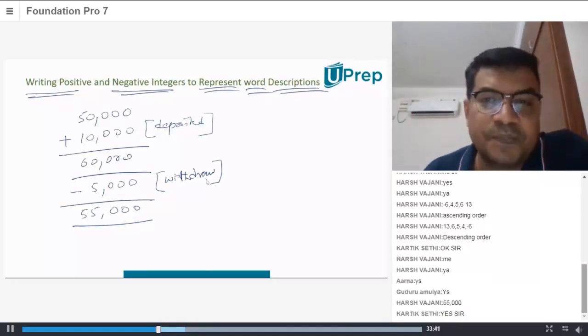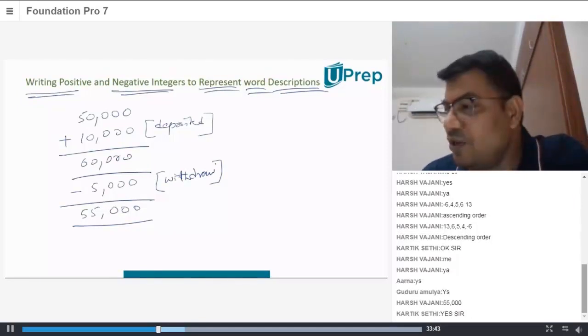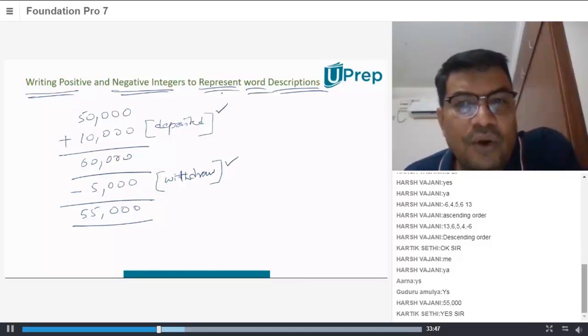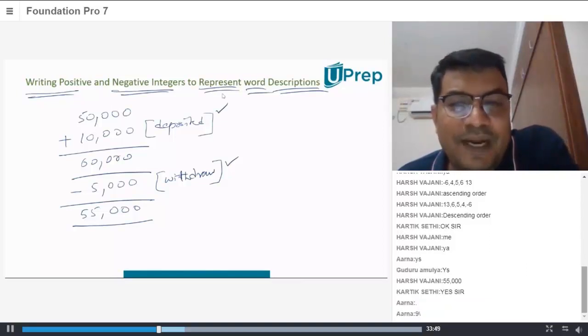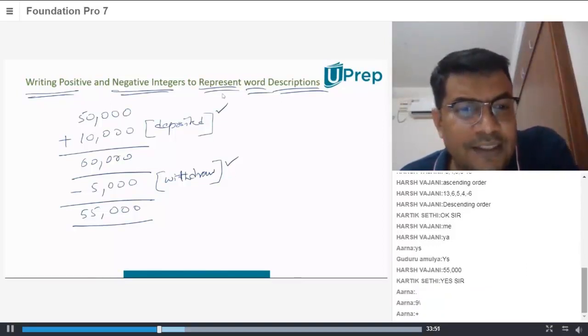Therefore, it's negative $5,000. So, negative integer. That withdrawing is negative. Depositing is positive. So, you just need to understand the perspective here. Very good.